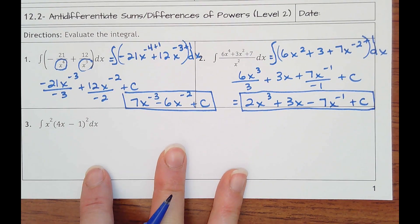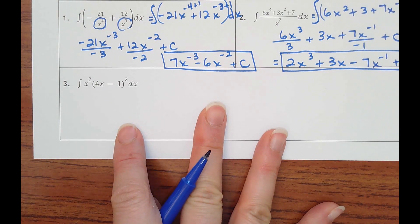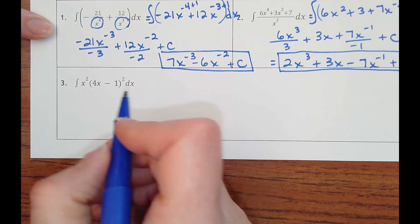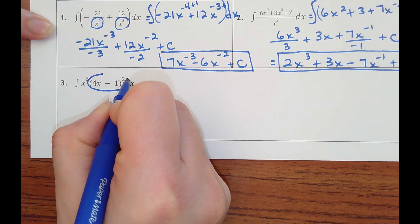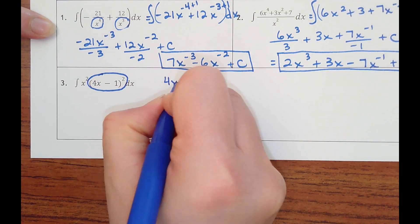All right, and then number 3. It's going to take the longest, just because we have to get everything multiplied out. So you would want to do your foiling here. Because what that means is you've got 4x minus 1 times itself.